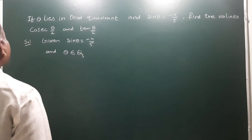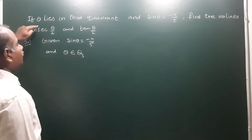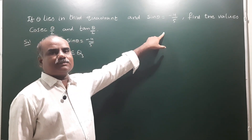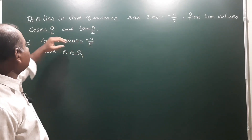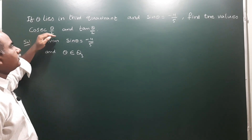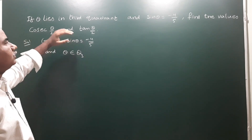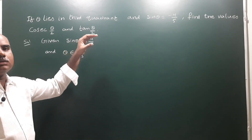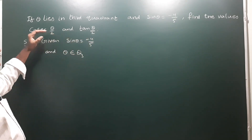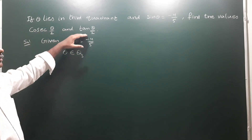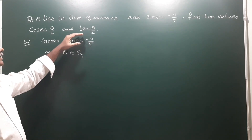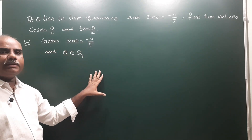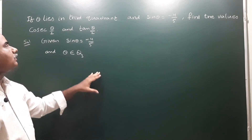Next problem: if theta lies in the third quadrant and sin theta is equal to minus 4 by 5, find the values of cosec(theta/2) and tan(theta/2). To find these, we need the values of sin(theta/2) and cos(theta/2).